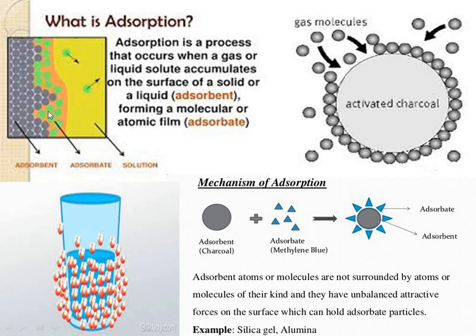In adsorption, the adsorbent is the solid surface, the adsorbate is the substance being adsorbed, and the solution is the medium. Adsorption is a process that occurs when gases or liquids accumulate on the surface of a solid or liquid. For example, with activated charcoal, gas gets adsorbed — the molecules of the gas get attached to the surface of the charcoal.